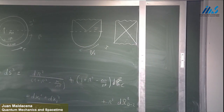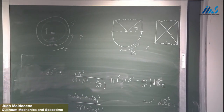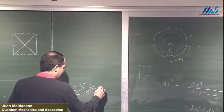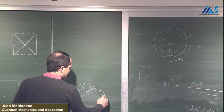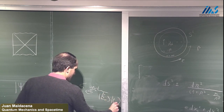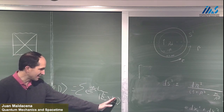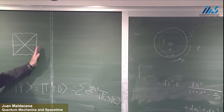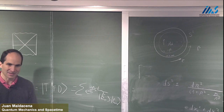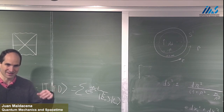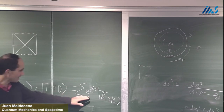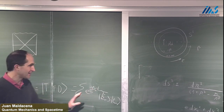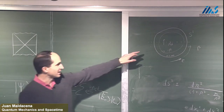This follows from what we said before. We have the thermofield double state — this particular entangled state. The Hilbert space for the theory on the right and the Hilbert space for the theory on the left are completely non-interacting. The Hamiltonians are simply the sum of one field theory Hamiltonian plus the other, but we have this entangled state deduced from the form of the Euclidean solution.